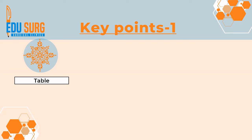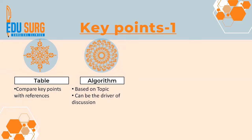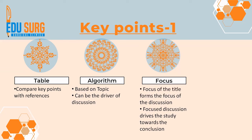It is very important that if you can create visual impressions of your data, readers find it very easy and interesting. You can have a table to compare key points with references — for example, an article on robotic surgery on the pancreas, you can have your outcomes vis-à-vis similar papers in a table. Or if your article is on how to manage a particular disease, you can create an algorithm based on the topic, and each point in your algorithm in sequence becomes your discussion. Tables and algorithms become very easy ways of writing a structured discussion.